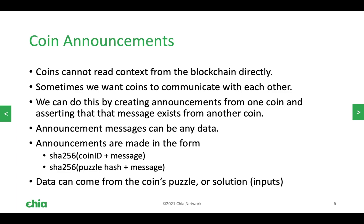You can pull information to be put into the announcement message. A Chialisp program is a tree of atoms that can also be interpreted and run as a program, meaning you can embed any data that can be represented as a vector of bytes. When designing a new puzzle, you want to consider: has this information been embedded into my puzzle as a constant, or has it been carried in as one of the arguments? Or has it been input as one of the solution parameters when this coin is being activated at spend time, also called validation time?